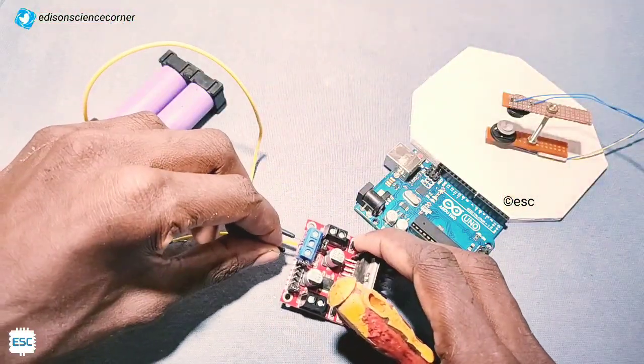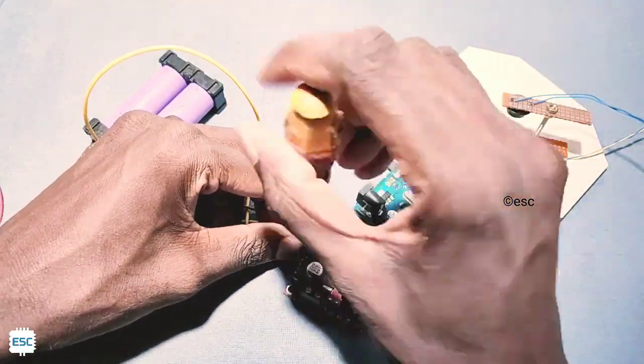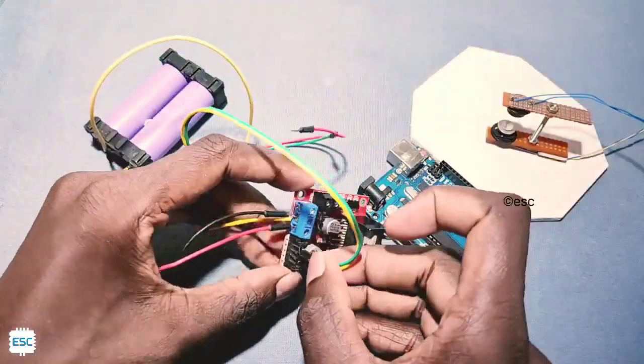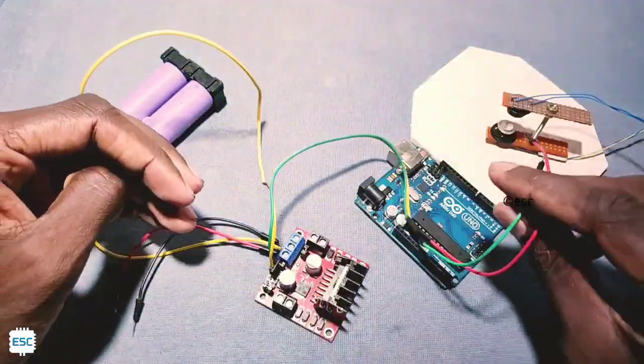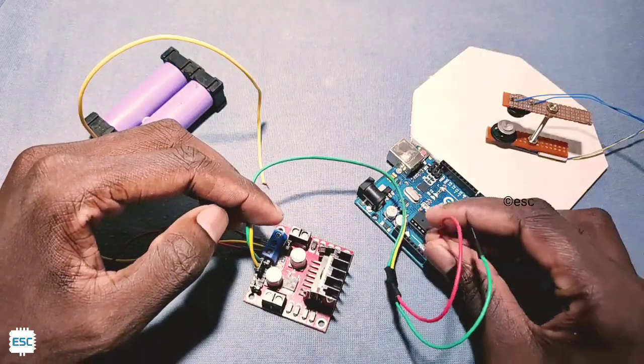You can download the circuit diagram from my blog. Link is in the description. The circuit is very simple. The controller sends 14 kilohertz signals to the driver, and the driver amplifies those signals. That's all.